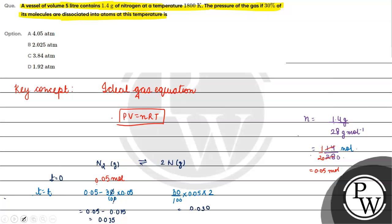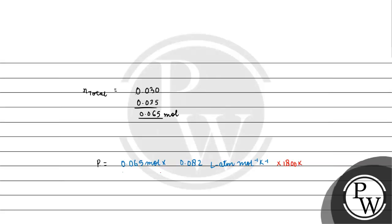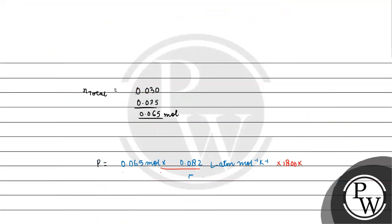The total number of moles of gas = 0.035 + 0.030 = 0.065 moles. Now applying PV = nRT: P = nRT/V = 0.065 × 0.082 liter·atm per mole per Kelvin × 1800 Kelvin, divided by 5 liters. Solving this gives us the pressure of the gas.